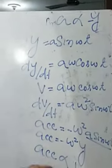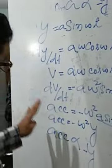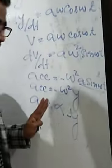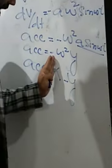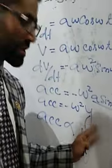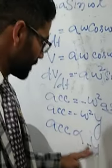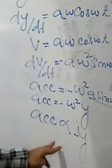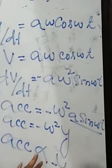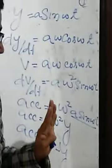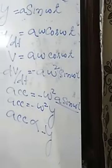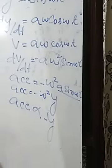So the condition for simple harmonic motion — that acceleration is directly proportional to displacement with a negative sign — is satisfied. Therefore, y = A sin(ωt) represents simple harmonic motion. This is one example.